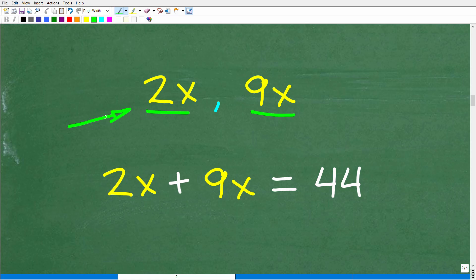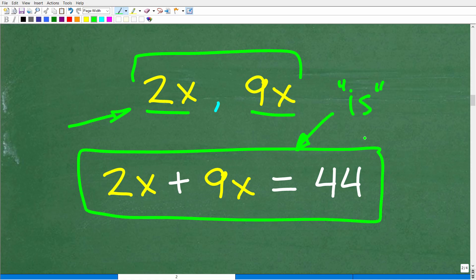So meaning that if we add them up, remember, the sum is where we actually add two or more numbers. So the sum of 2x and 9x is 2x plus 9x is 44, right? The sum of these two integers, anytime you see that word is in a math word problem, that means the equal sign. So the sum of these two integers is 44. And now really,